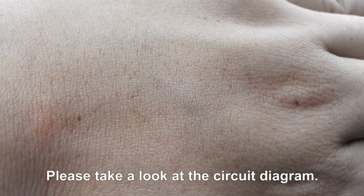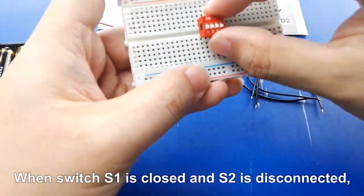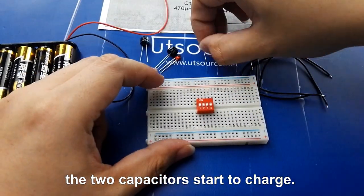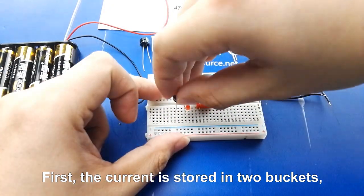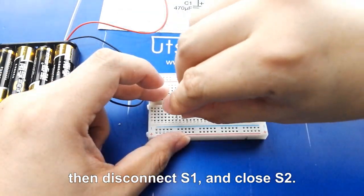Please take a look at the circuit diagram. When switch S1 is closed and S2 is disconnected, the two capacitors start to charge. The capacitor is like two small buckets - first, the charge is stored in two buckets. Then disconnect S1 and close S2.